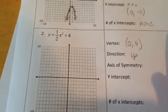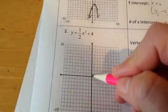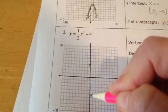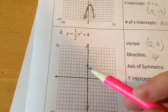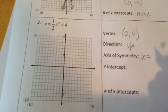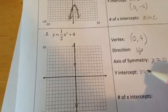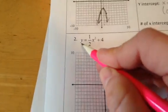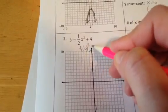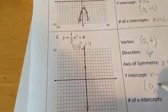On to the next. If I plot my vertex, it's at 0, 4. My axis of symmetry goes right through my vertex, so the equation is x equals 0. My y-intercept always happens when x is 0, so when x is 0, y is one-half times 0 squared plus 4, so that's just 4.